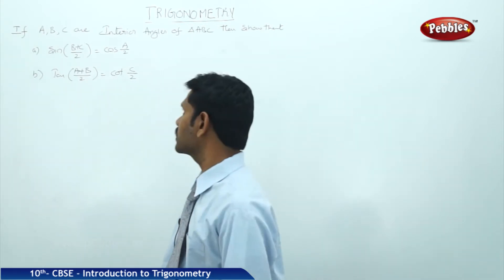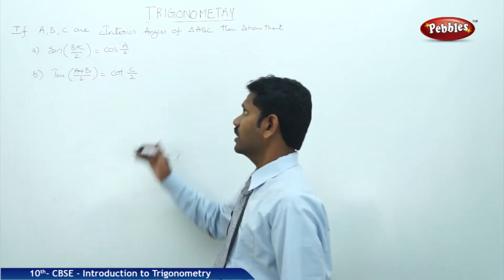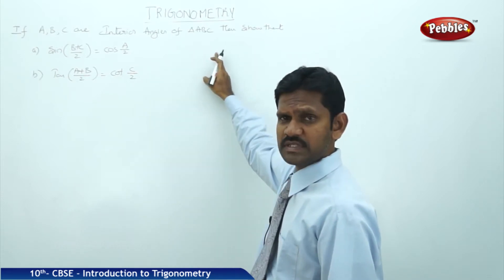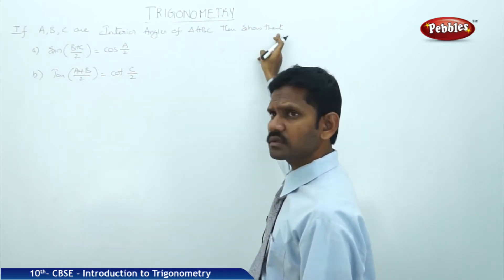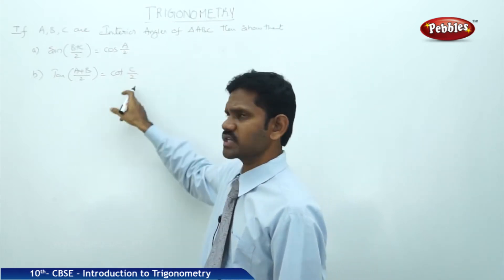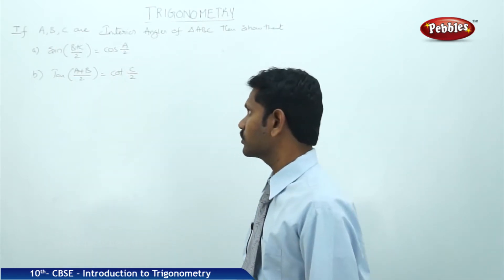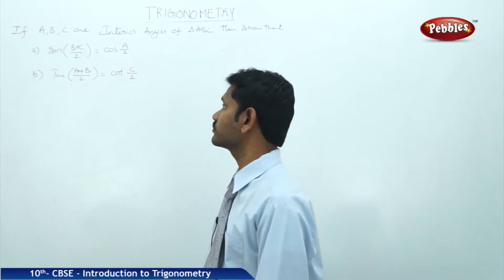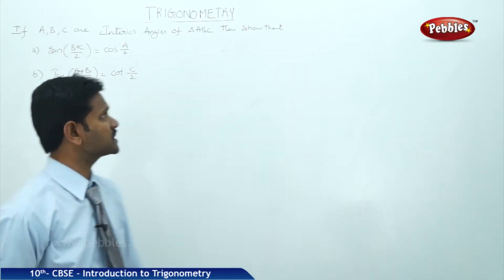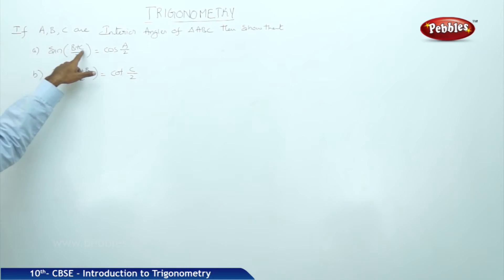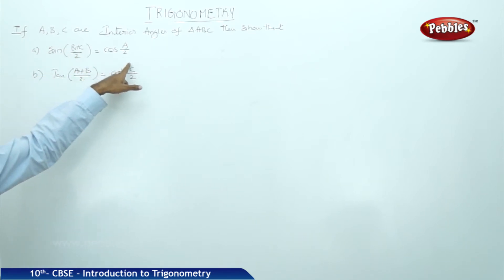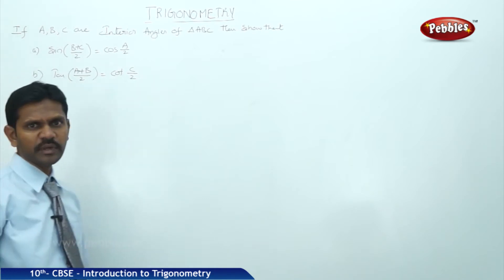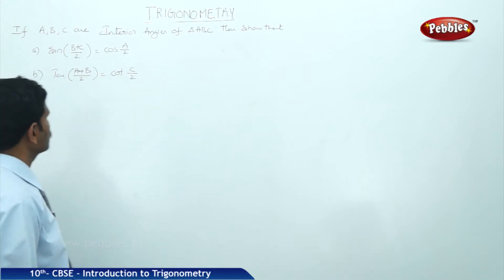Let us follow the next examples. If A, B, C are interior angles of triangle ABC, then show that — two questions are given. First: sine of (B+C)/2 is equal to cos(A/2). Second: tan of (A+B)/2 is equal to cot(C/2).